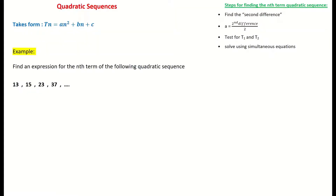Here, we're looking at forming an expression for the nth term of a quadratic sequence. A quadratic sequence is one which will have not just a first difference, but it will have a second difference. And your expression will also have a power of two in it. So you'll notice that the highest power is two. That's what will tell you if it's a quadratic sequence.